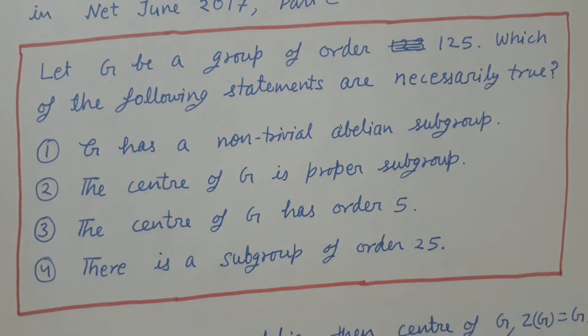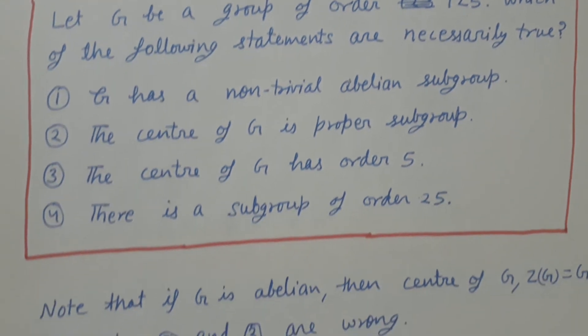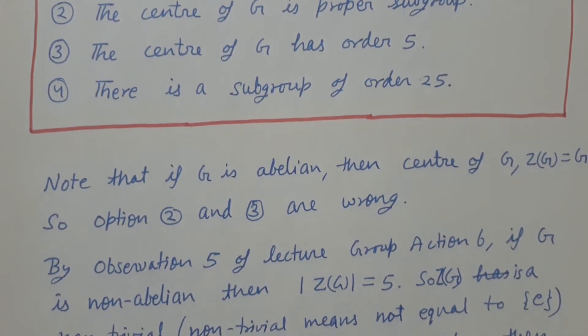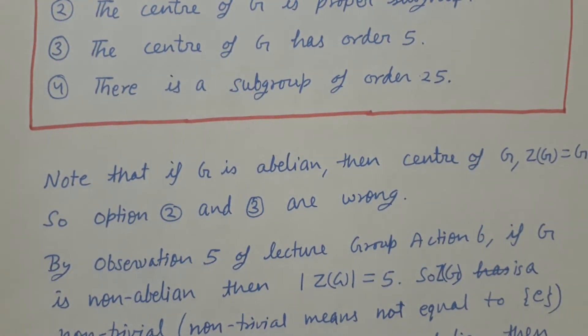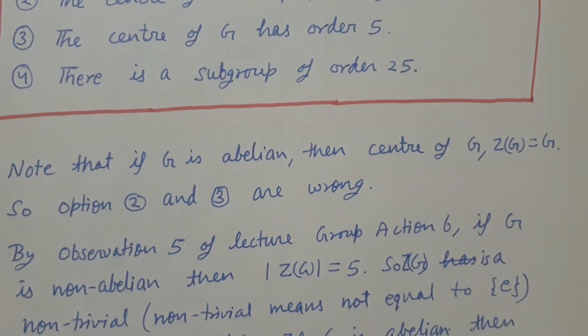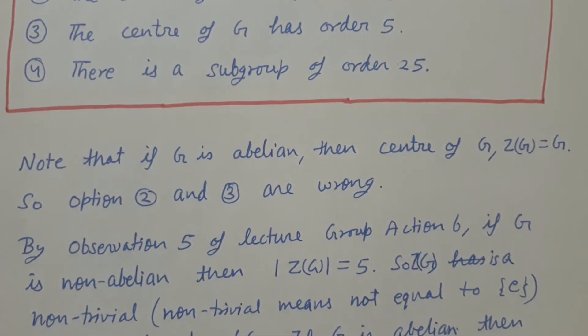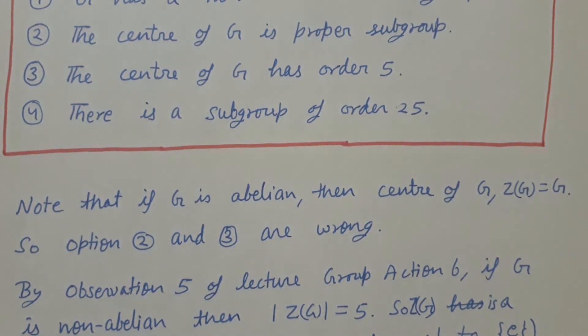If G is abelian, then the center of G is G, so options 2 and 3 are wrong. What is option 2 and 3? The center of G is a proper subgroup. So in case of an abelian group, the center of G is not a proper subgroup, and it is not given in the question that G is non-abelian.